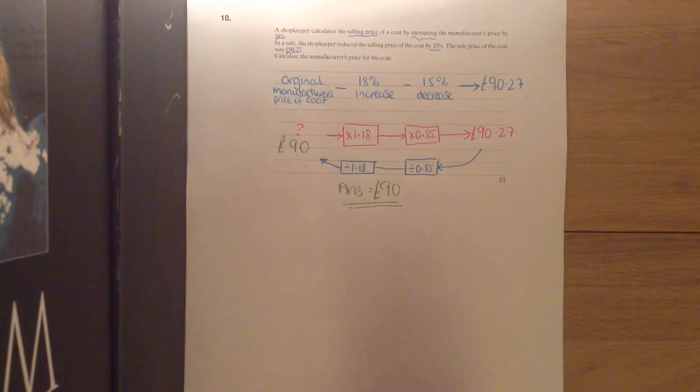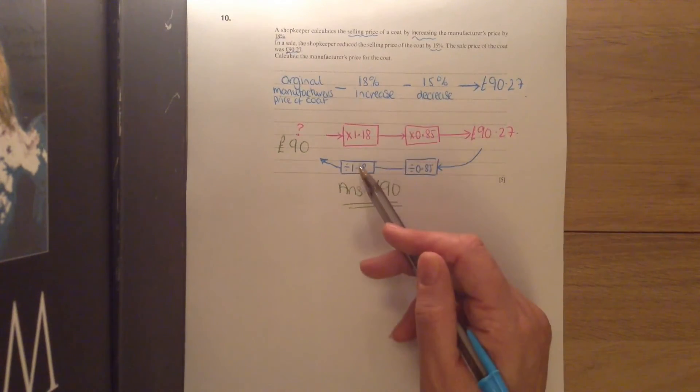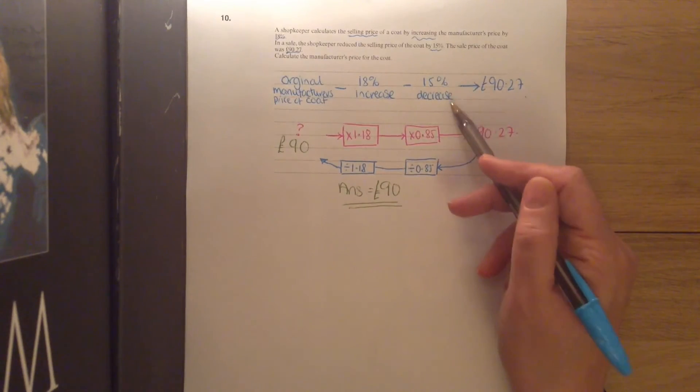Using multipliers, we started off with something, we multiplied it by an 18% increase, so we times by 1.18, then we decreased by 15%.